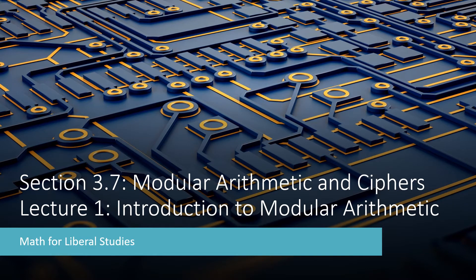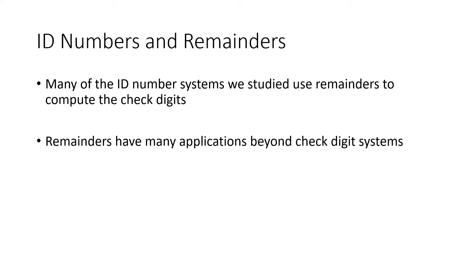This is the first video for section 3.7 on modular arithmetic and ciphers. In this lecture, I'll be giving you an introduction to modular arithmetic. Many of the ID number systems that we've already talked about use remainders to compute the check digits, but remainders have many applications beyond these check digit systems. In this lecture, we'll be focusing on the ideas relating to remainders, and then in the next lecture, we'll talk about how we can apply those ideas.